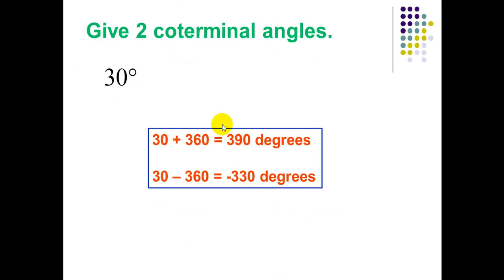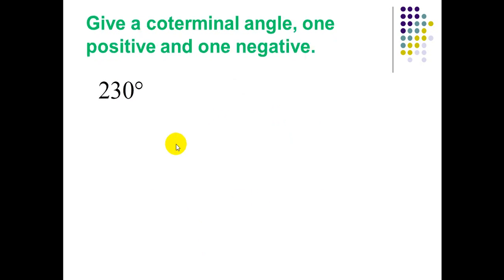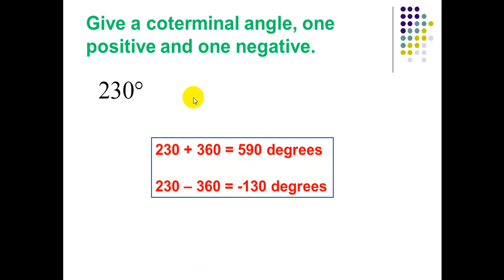Give two coterminal angles for 30°: 30 plus one revolution and 30 minus one revolution. The equivalent angles to 30° are 390° and negative 330°. Now give two coterminal angles, one positive and one negative, for 590°.